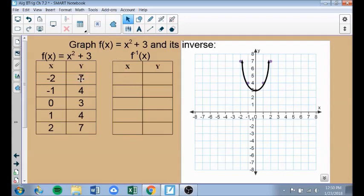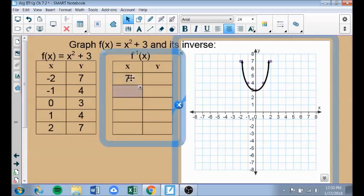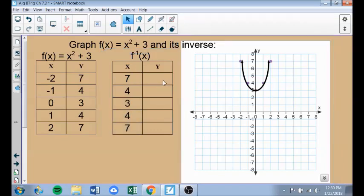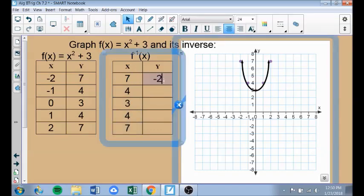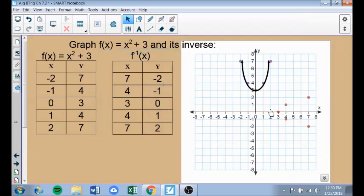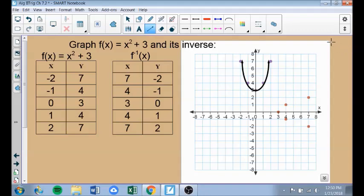F inverse means I'm going to take the X values and the Y values and switch them. So I'm going to go 7, negative 2, 4, negative 1, 3, 0, 4, 1, 7, 2. These points are all over here. It's another reflection over the line Y equals X. Switch X and Y to get the reflection to get the inverse.